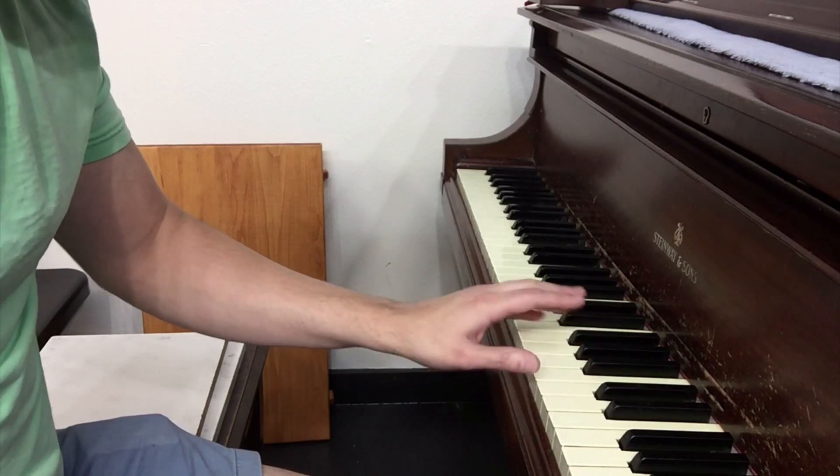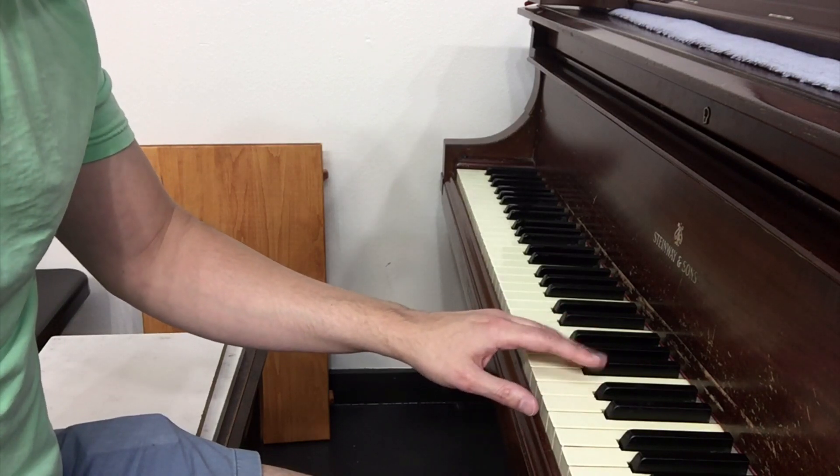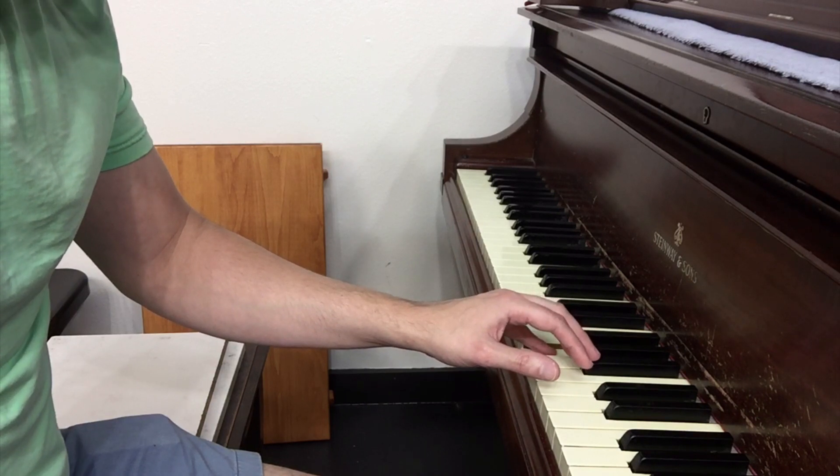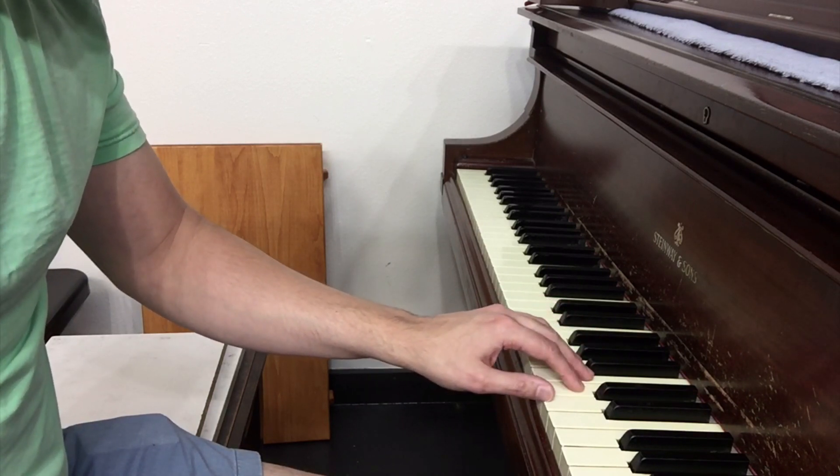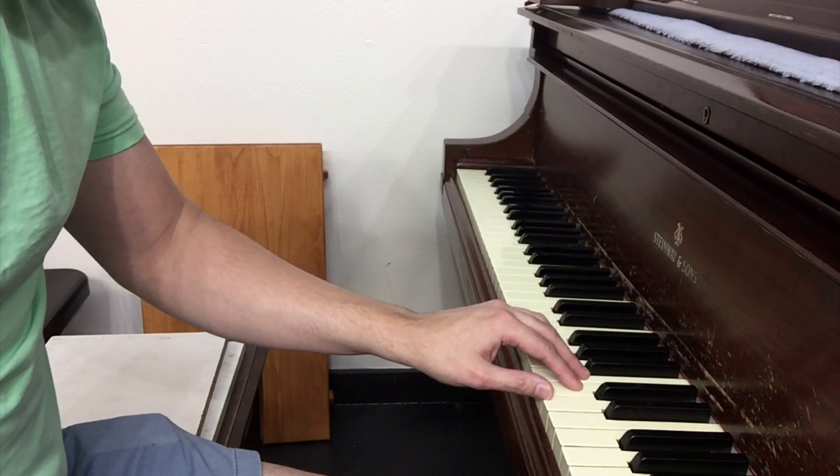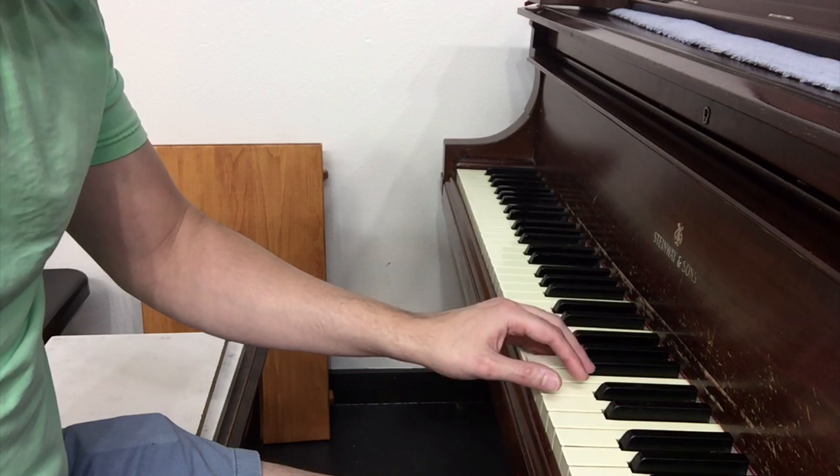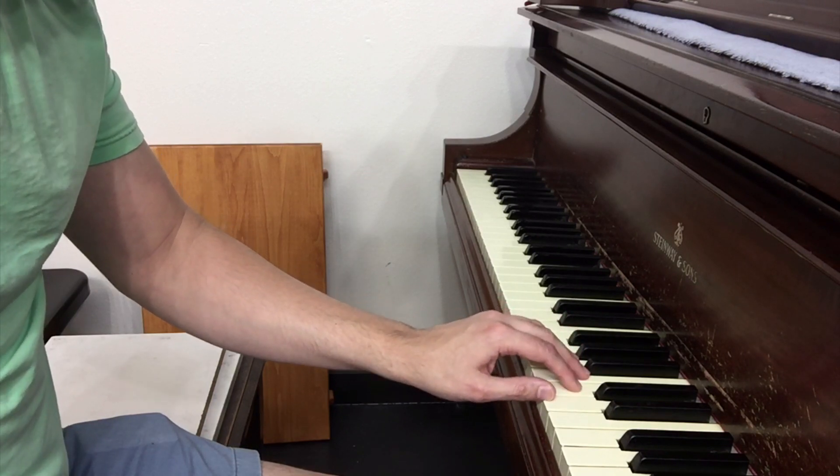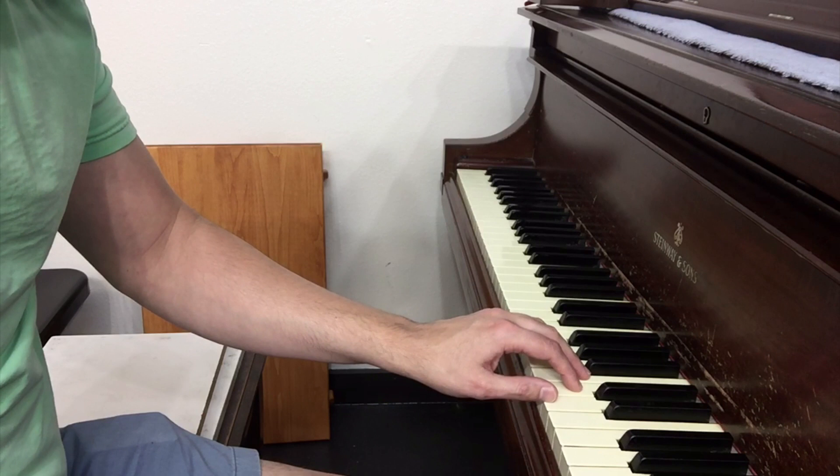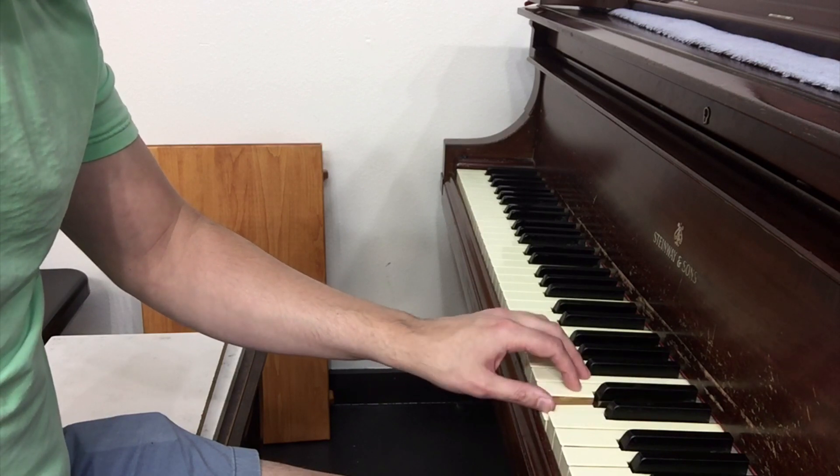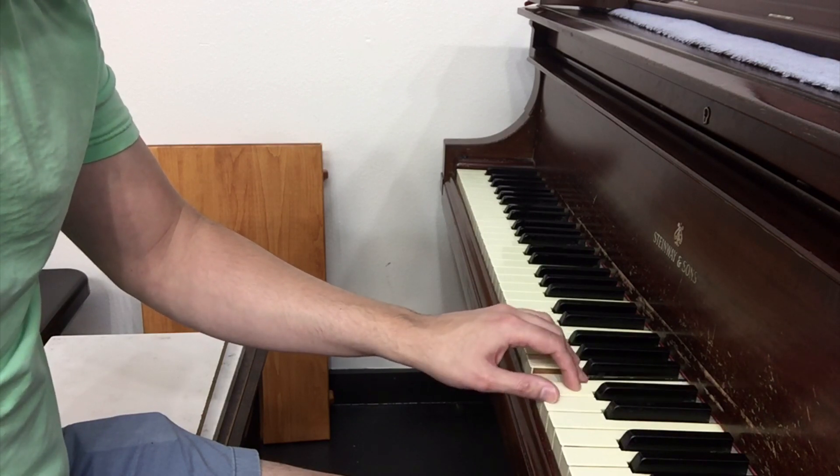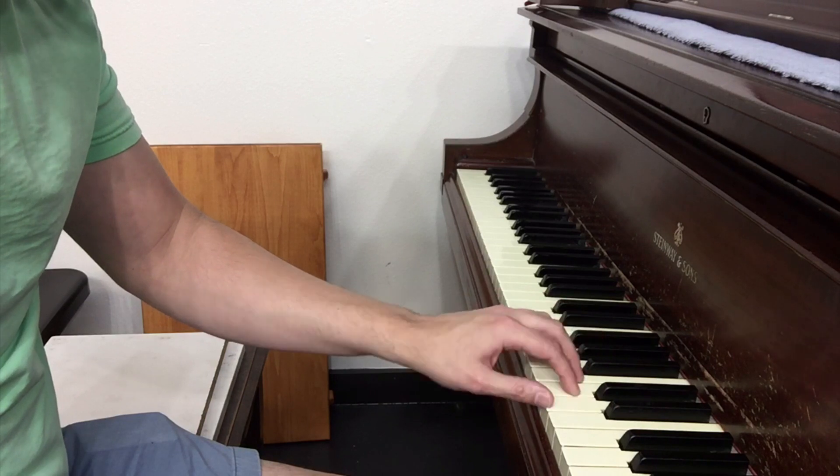So one of the biggest mistakes people make when they have an Alberti bass pattern is they don't try out active hand positions versus relaxed or quiet hand positions. So they'll try to play the Alberti bass more like this where the fingers are just touching the keys, and they're just going from the key. You see, I'm not actually, none of my fingers are leaving the keys when I play.